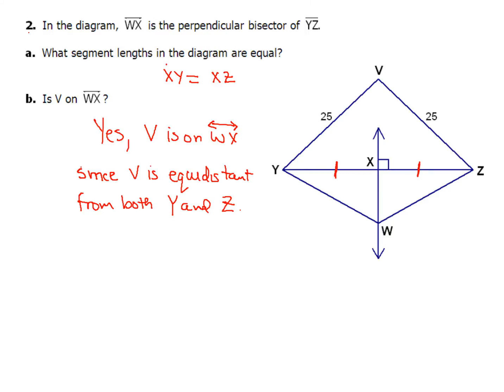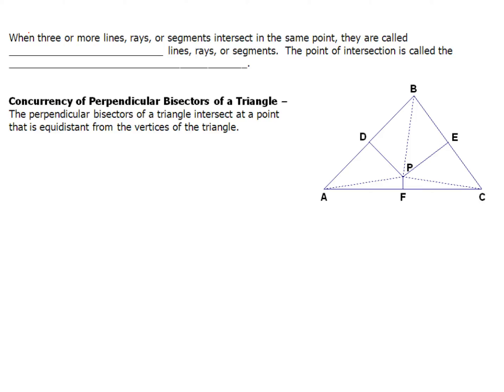Now let's take a look at our next piece. Wow. Now that we've got this, when three or more lines, rays, segments, they intersect at the same point, that's going to get a very special name. And when that happens, those are going to be called concurrent lines, rays, or segments. And this point of intersection, it's going to be called the point of concurrency.